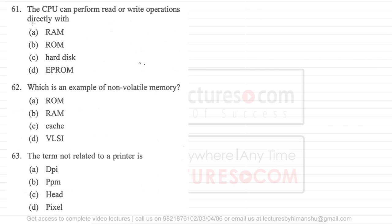Focus on the term directly because CPU cannot directly write on hard disk. CPU generally writes on RAM and from RAM we write data to the hard disk. So CPU can read or write operations directly from RAM. CPU cannot write on ROM. CPU cannot write on hard disk.